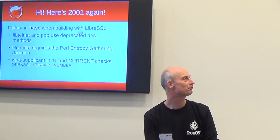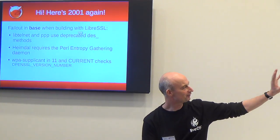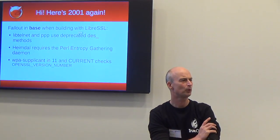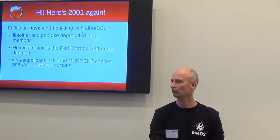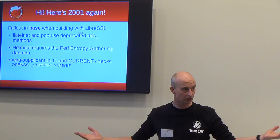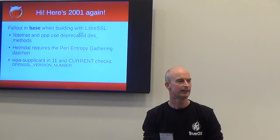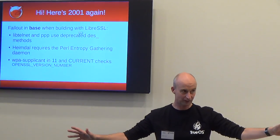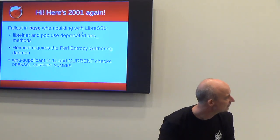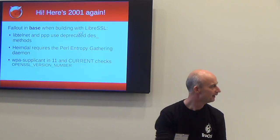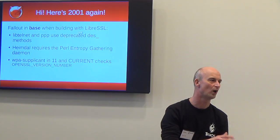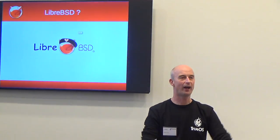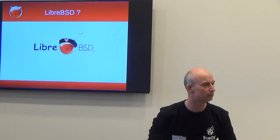There was still some fallout in base - things like PPP that use ancient stuff that should have been deleted in 2000 but wasn't. The Perl entropy gathering daemon (EGD) - people my age may remember times when you didn't have /dev/random. That era ended in 2004, but it's still in OpenSSL. And WPA supplicant - the tool you use to connect to Wi-Fi - actually has checks for OpenSSL version 1.1.0. So now I have what I call LibreBSD, but that's not actually a thing - you can find it on my GitHub.